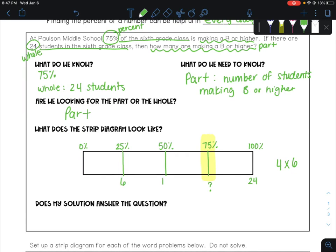The bottom, if we split up 24 into 4 pieces, we know that each one has to be 6. So 6, 12, 18, 24. That gives us our answer, 18 students. And that is using a tape diagram, a strip diagram.